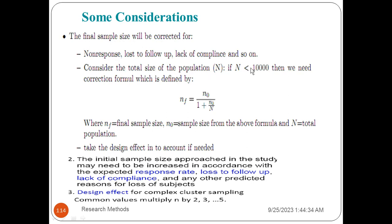The total size of the population will be corrected for non-response, lost to follow-up, and lack of compliance. This is the correction formula. This is the final sample size — the total population and the source population.